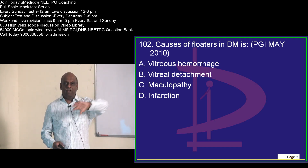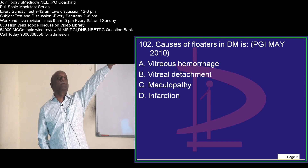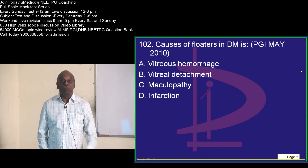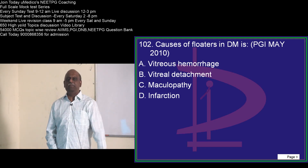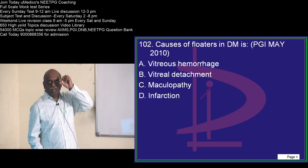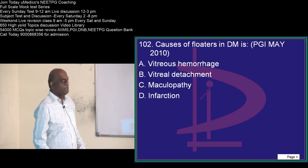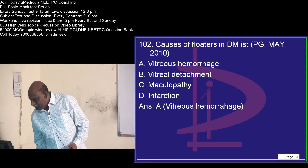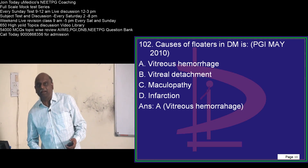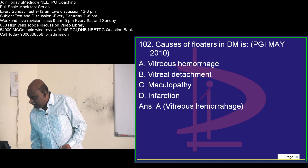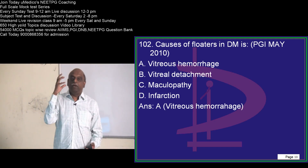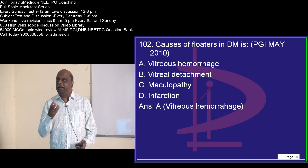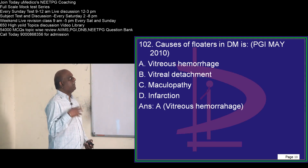Now, floaters — you might find your PG rank floating before your eyes when looking into the sky while preparing for entrance exams. Why do you get floaters? Floaters are a normal phenomenon. But vitreous hemorrhage in diabetic retinopathy, when there is vitreous neovascularization and bleeding into the vitreous leading to vitreous hemorrhage, floaters is one of the presenting features.